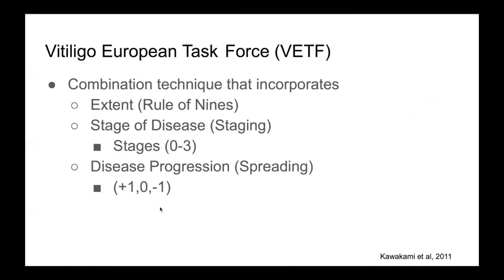Another assessment technique used is the vitiligo European task force. This combination technique incorporates several characteristics of vitiligo involvement, such as extent, which is detailed by the rule of nines; disease staging, stages zero through three, where zero means normal pigmentation and three means complete depigmentation including whitening of hair follicles; and disease progression, where plus one indicates rapidly progressive disease spread, zero indicates stable disease state, and negative one represents a regressive or repigmented state of disease.